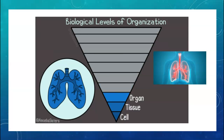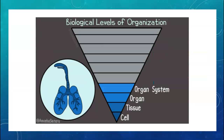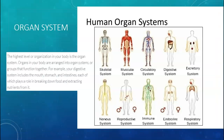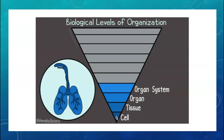When you have a few organs all performing similar functions within the same system in the body, you call that an organ system. Cells organize into tissues, tissues into organs, and organs into organ systems. The highest level of organization in your body is the organ system. Organs in your body are arranged into organ systems — groups that function together. For example, your digestive system includes the mouth, stomach, and intestines, each of which plays a role in breaking down food and extracting nutrients from it. Two or more tissues organize into an organ, and a bunch of different organs organize into the organ system.